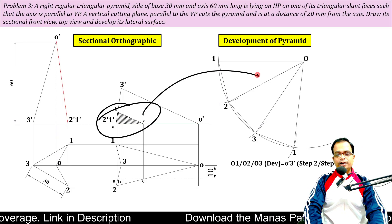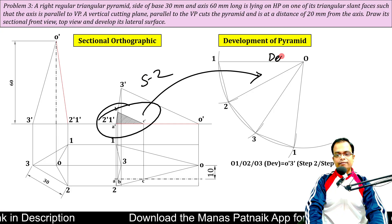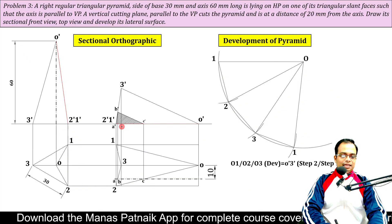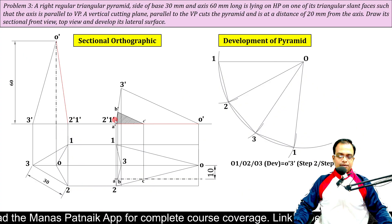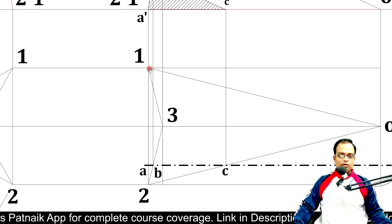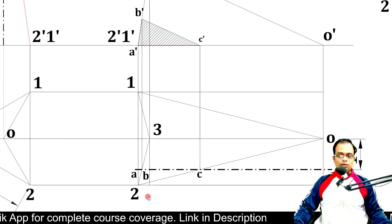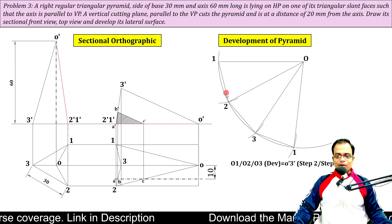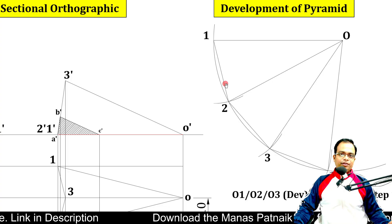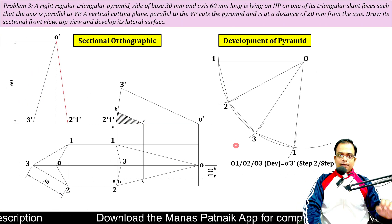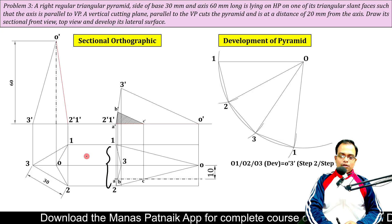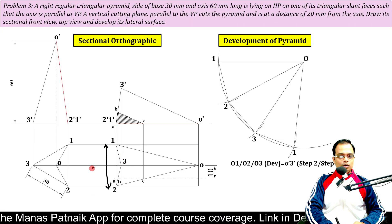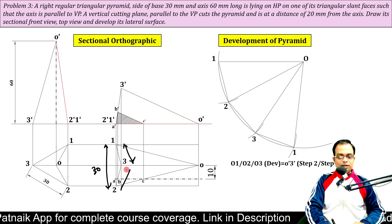Now, how do we shift the cutting points from step number two into the development? Point A is along edge 1-2, very close to 2. So point A will be along edge 1-2 in the development close to 2. Is edge 1-2 showing the true length? Yes — it is still 30 millimeters. However, edges 1-3 and 2-3 are not the true length.